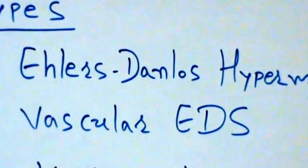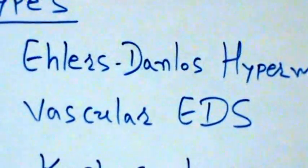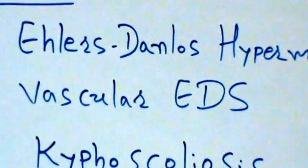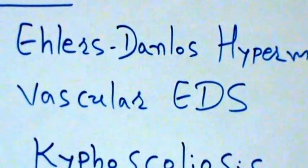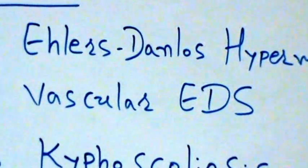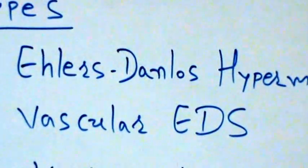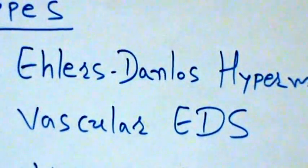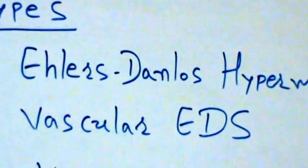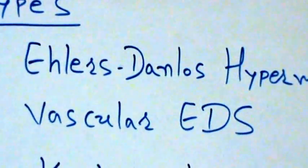The minor criteria include positive family history of EDS hypermobility type, or family history of joint laxity without significant skin or soft tissue weakness in a pattern consistent with autosomal dominant inheritance. Recurrent joint dislocations, subluxations — that is restricted movement of the joint — and chronic joint, limb, and/or back pain.